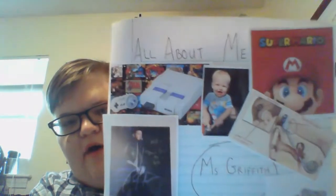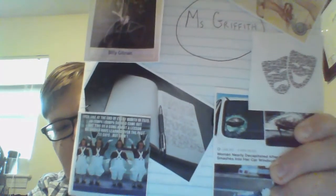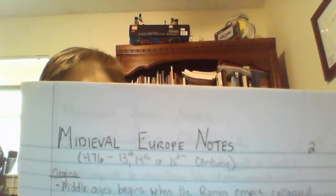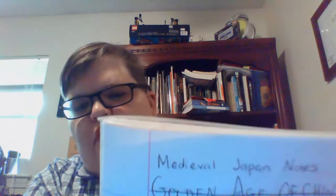Today we are going to set up the first four pages. The first page is what I want you to do for Friday — it's an All About Me page with Ms. Griffith. I will upload a video on Friday that tells you what all of those images are. On page two, we're going to put Medieval Europe notes, numbered page two. Page three will be Medieval Japan notes, numbered three. And page four is the Golden Age of China, numbered four.